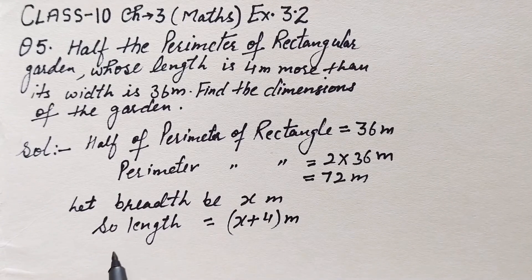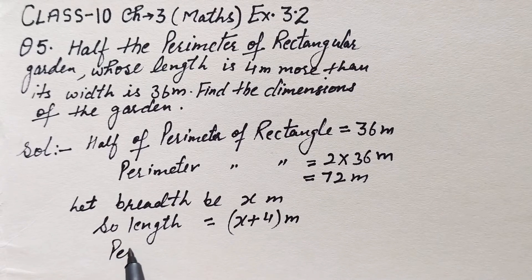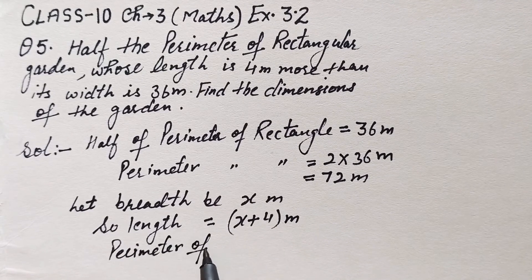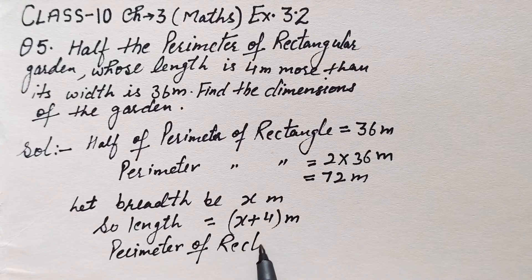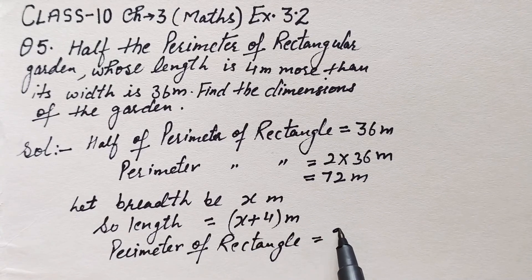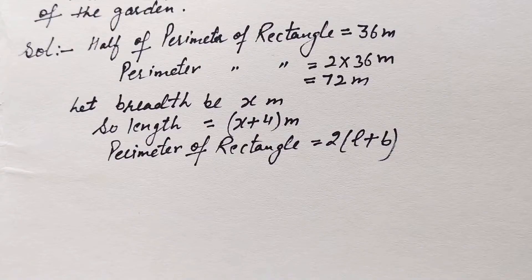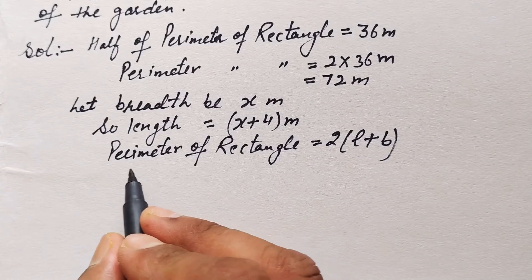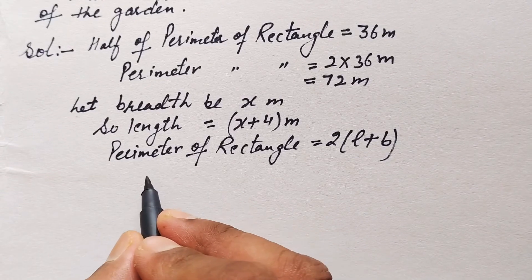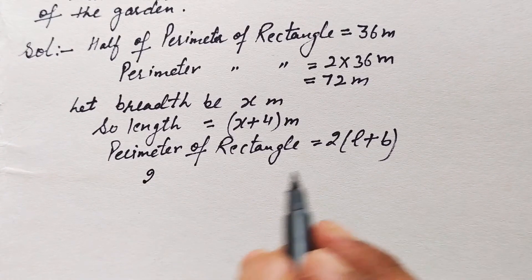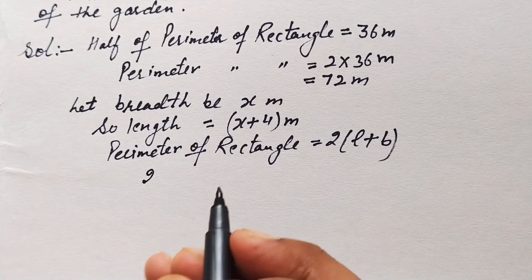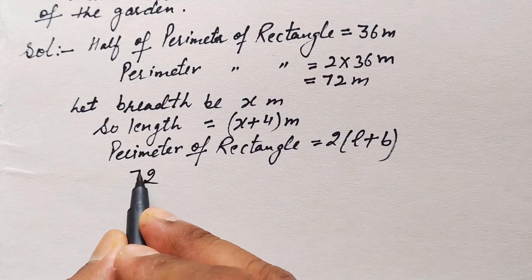We apply the formula: perimeter of a rectangle is equal to 2 into length plus breadth. Filling in the values, perimeter is 2 into length plus breadth, and the perimeter is given to us as 72 meters.